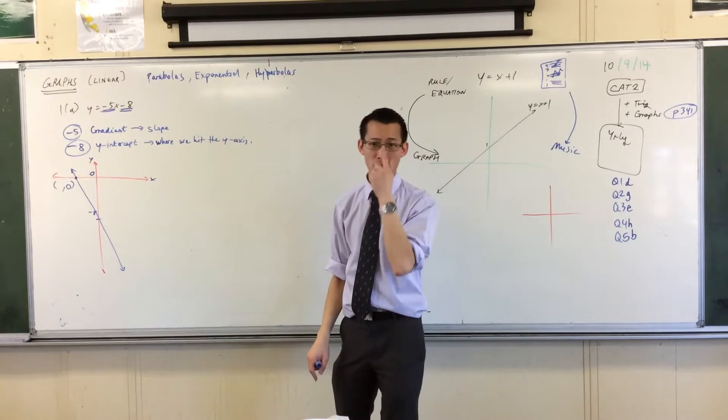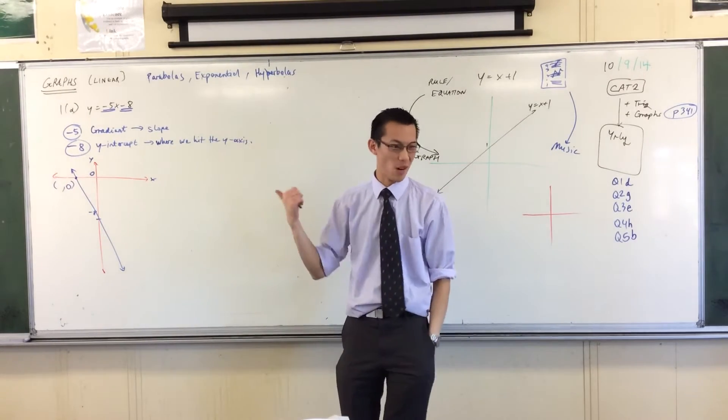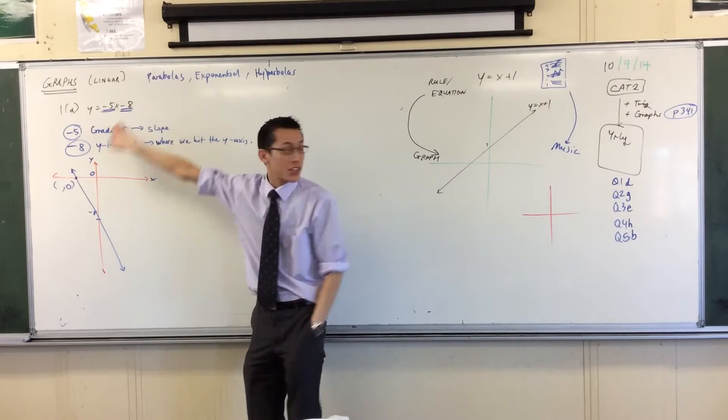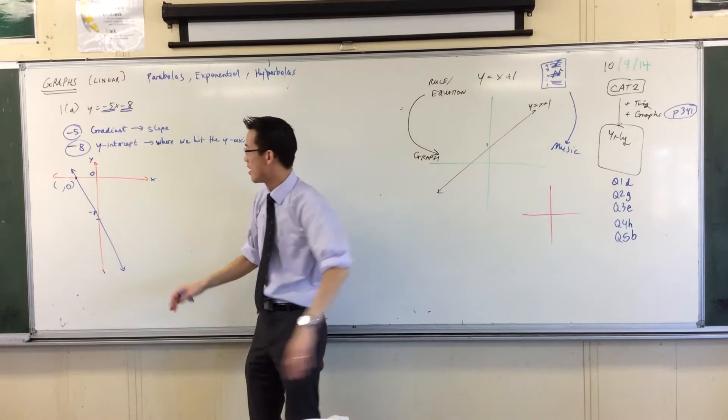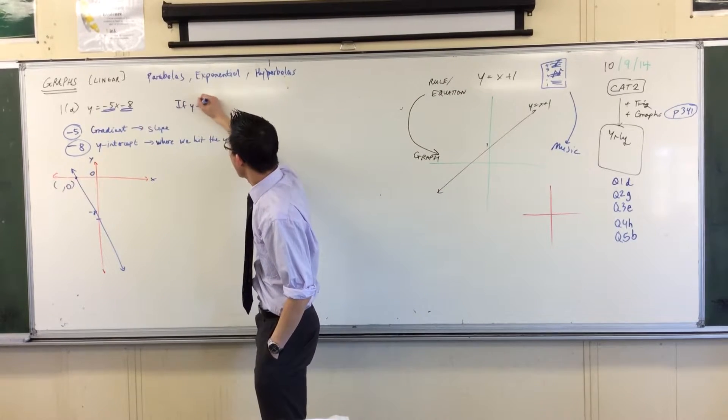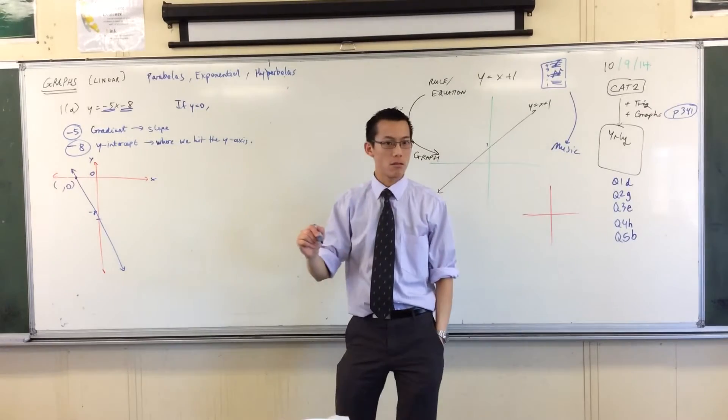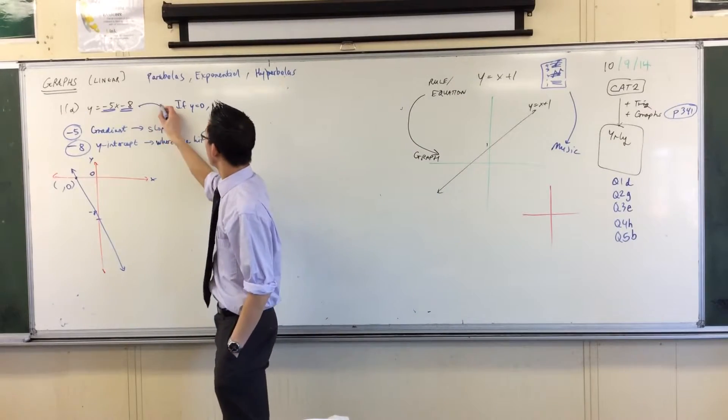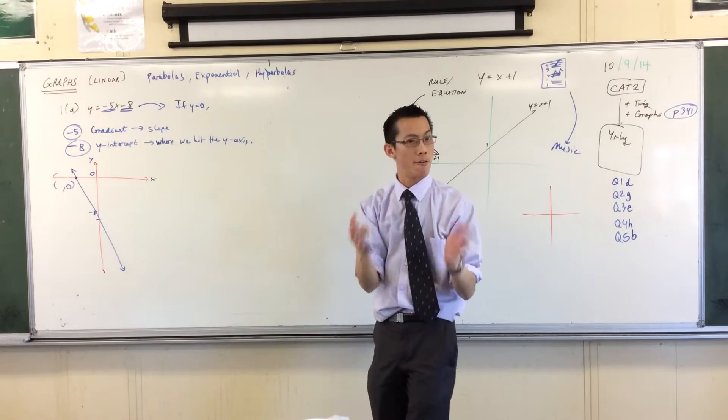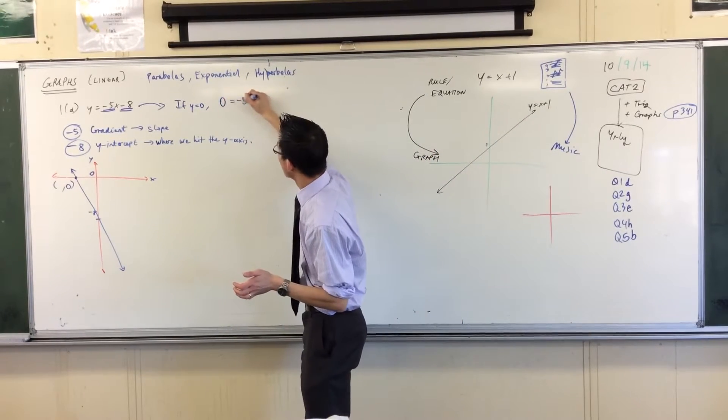So therefore, in order to find out, well okay, what's the other number, what's the x-coordinate? You take this rule, this equation, this algebra stuff, right? And you say, well what happens if y equals zero? If y equals zero, what happens to this thing? Well there's y over there, so I will substitute zero for y. I get this: zero equals...